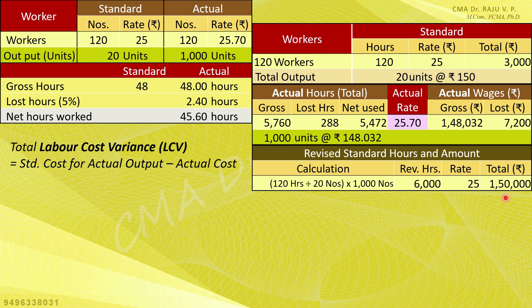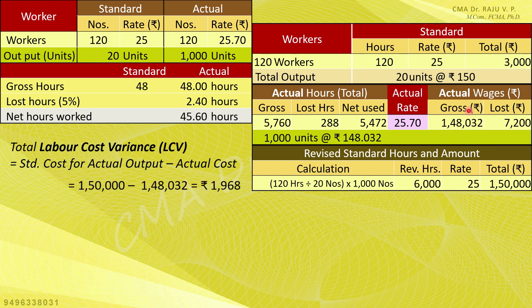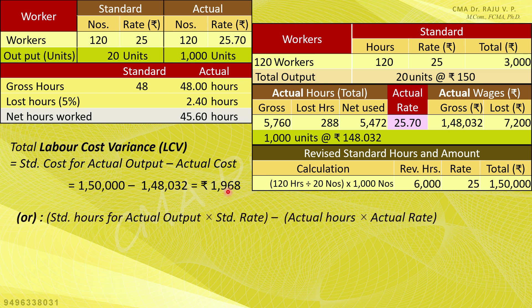To calculate the labour cost variance, the formula is: standard cost for actual output minus actual cost. For 1,000 units produced, the standard cost is Rs.1,50,000. Minus actual cost of Rs.1,48,032 gives Rs.1,968. That is favourable. The result is Rs.1,968 favourable for the labour cost variance.